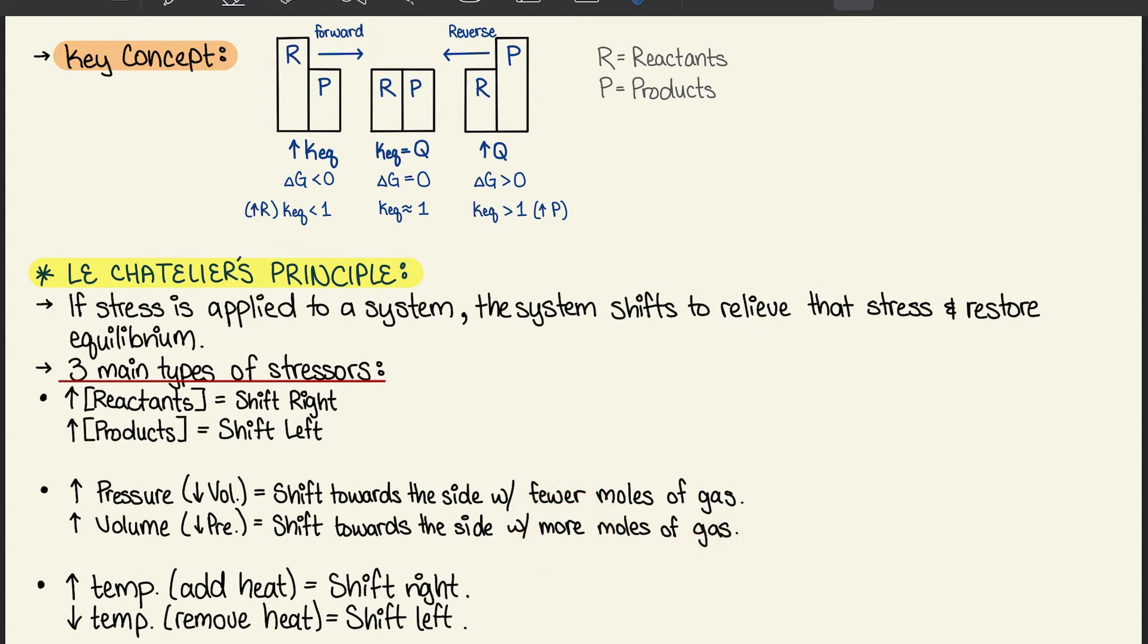And if you increase the temperature, so you add heat, it's going to help favor that forward reaction that we were talking about. So it's going to shift to the right. And if we decrease the temperature, we're removing heat, we're removing kinetic energy. The products will want to go back to their original state. So that will forward the reverse reaction.